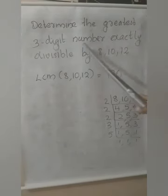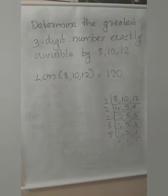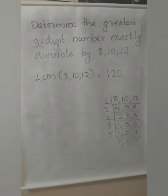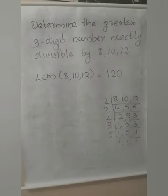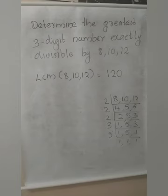Question: Determine the greatest 3-digit number exactly divisible by 8, 10 and 12. Here, by seeing the word 'greatest', don't think we are finding the HCF — no. We are finding the LCM, because we need exact divisibility by 8, 10 and 12. In the previous question we found the smallest 4-digit number; similarly here we need the greatest 3-digit number. Finding the LCM of 8, 10 and 12 by prime factorization: 2 × 2 × 2 × 3 × 5 = 120.